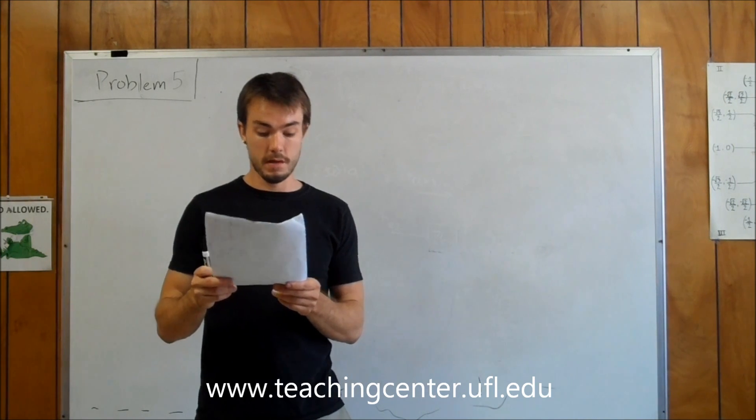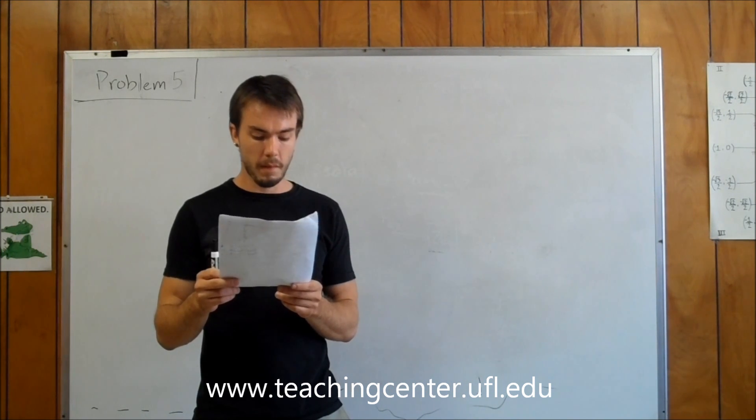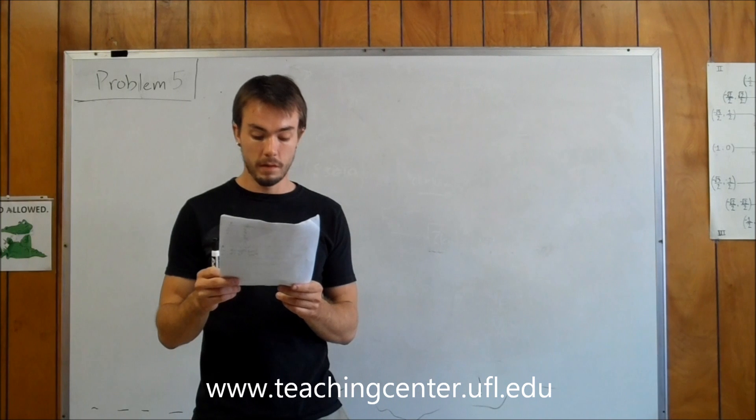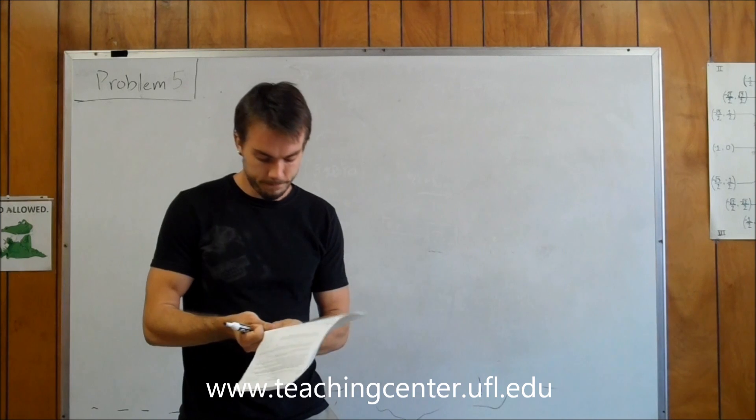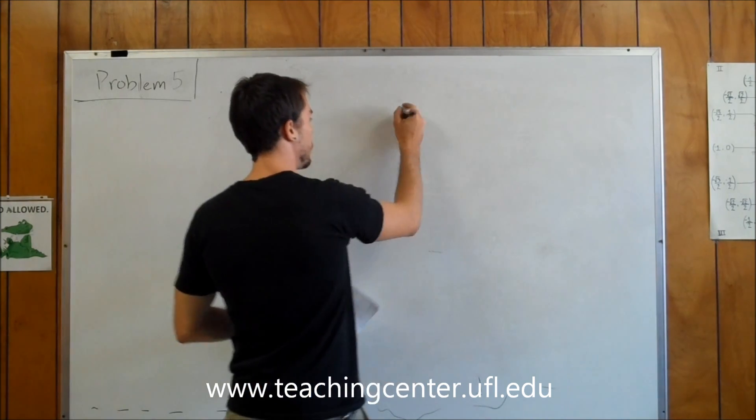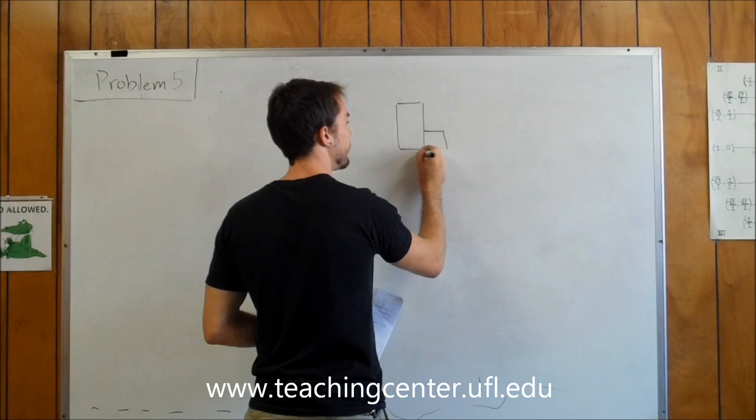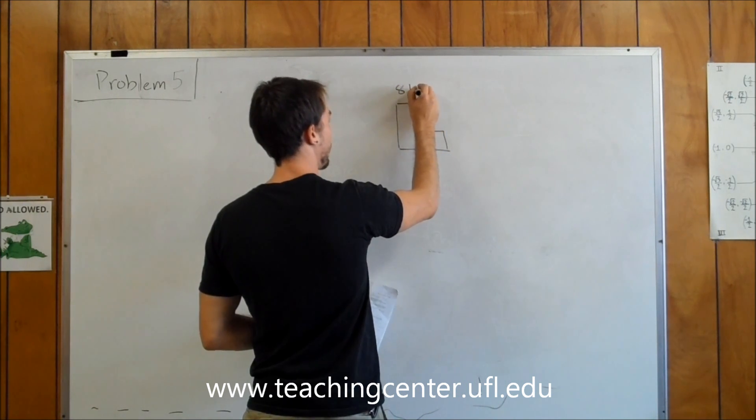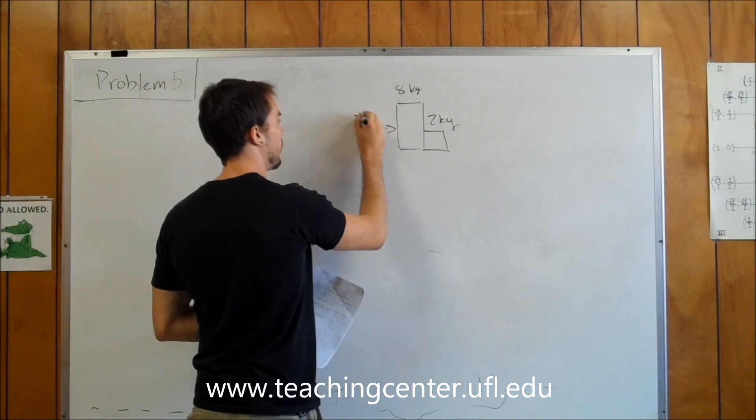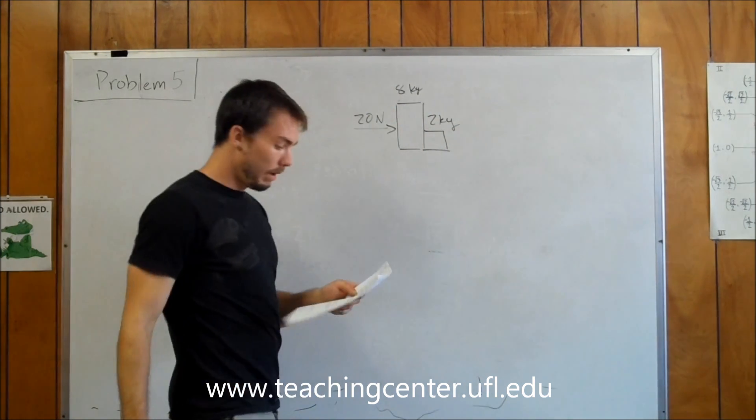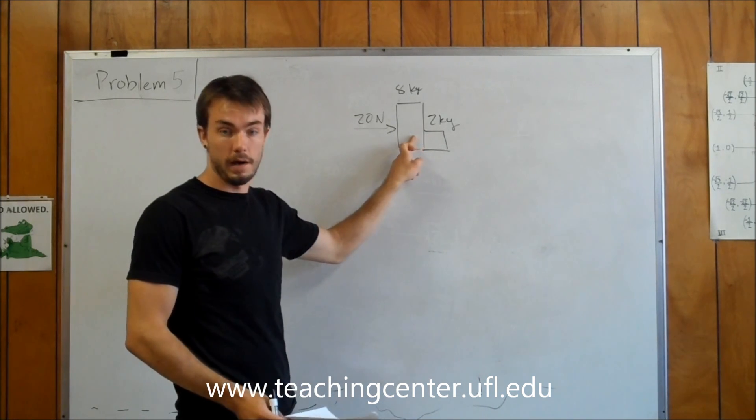Problem 5 says: push on the 8-kilogram block in the figure on the left with a force of 20 newtons. What is the magnitude of the horizontal force of the 2-kilogram mass on the 8-kilogram mass? All surfaces are frictionless. So here's two blocks right up against each other. One 8-kilograms, one 2-kilograms, and a 20-newton force. What they're asking for is the horizontal force of the 2-kilogram on the 8-kilogram block.